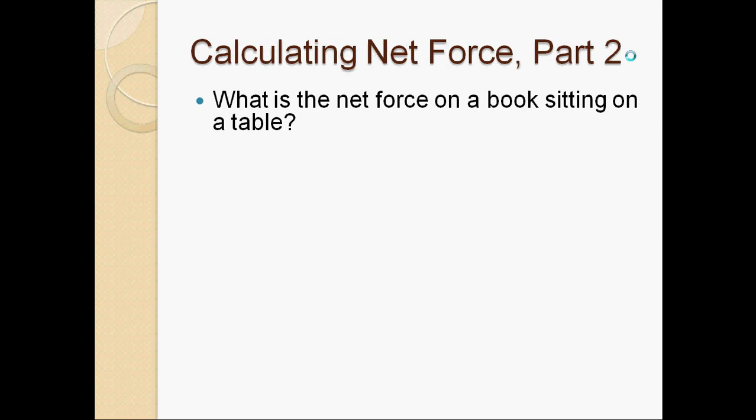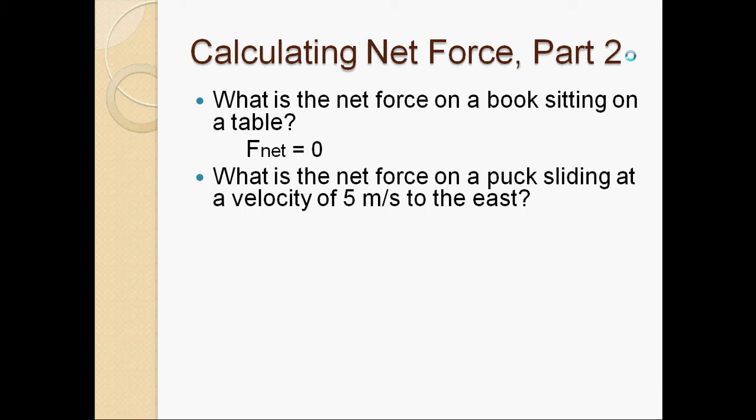Let's consider examples. A book sitting on a table — the net force is zero because it's not moving. The gravitational force and normal force perfectly cancel each other out. Now a hockey puck sliding on ice at a constant velocity of five meters per second to the east — don't be deceived. The key word is constant velocity: it's not accelerating, so the net force is zero. Some force got it moving initially, but now all forces are balanced.